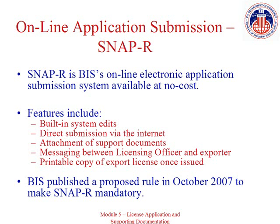These features include built-in system edits that prevent common errors, the ability to attach support documentation, and the ability for the licensing officer to request additional information through the SNAP-R secure messaging system with an email notification sent to the applicant. License applications submitted using SNAP-R are completed more quickly. In fact, SNAP-R has been so successful that BIS may make online application submissions mandatory.